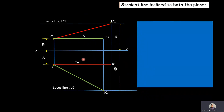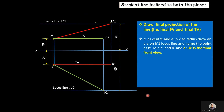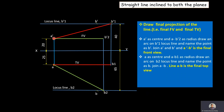After drawing the front view and top view, with A' as center and AB2' as radius, draw an arc on the A' locus line to get point B'. Similarly, with A as center and AB1 as radius, draw an arc on the A locus line to get point B. Then join A' and B', and join A and B.